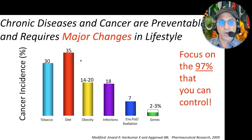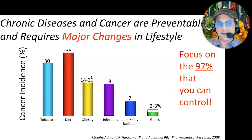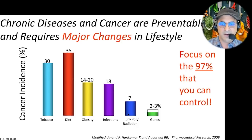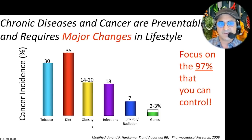When we look at what we can control, diet is the largest contributing factor for chronic disease and cancers. Obviously, tobacco — people shouldn't be smoking or vaping. Obesity is a large problem right now in America. Infections have to do with your immune system, and environmental pollution is another concern. Let's focus on the 97% that we actually can control, and not be so stressed about having a gene that might turn on. Why don't we do what we can right now to take strong action for change?